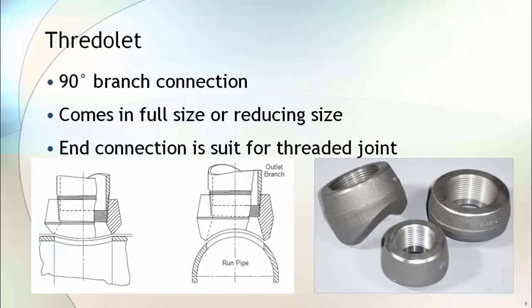Threadolet is a 90-degree branch connection with a threaded end connection. It also comes in full size or reducing size. The end connection of threadolet is suitable for threaded joints.